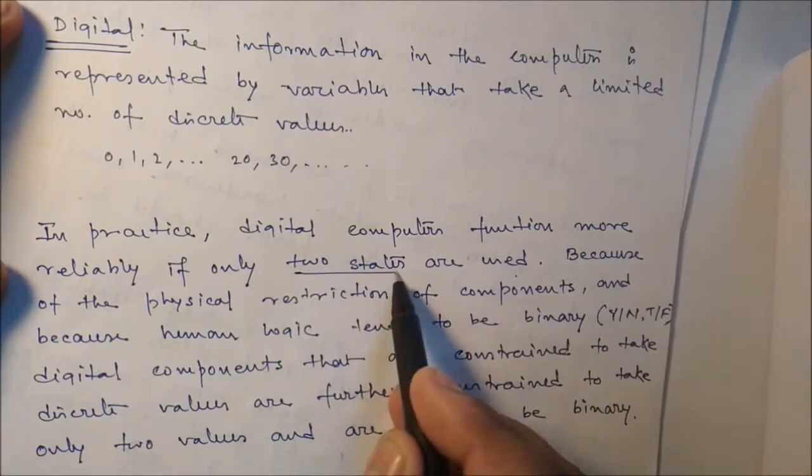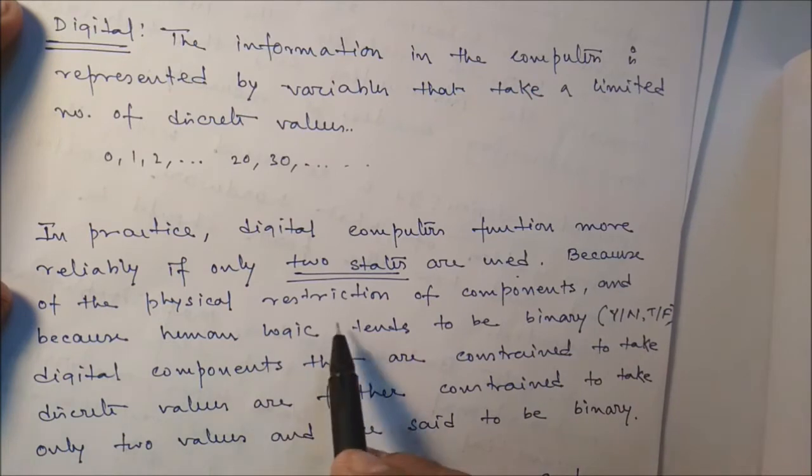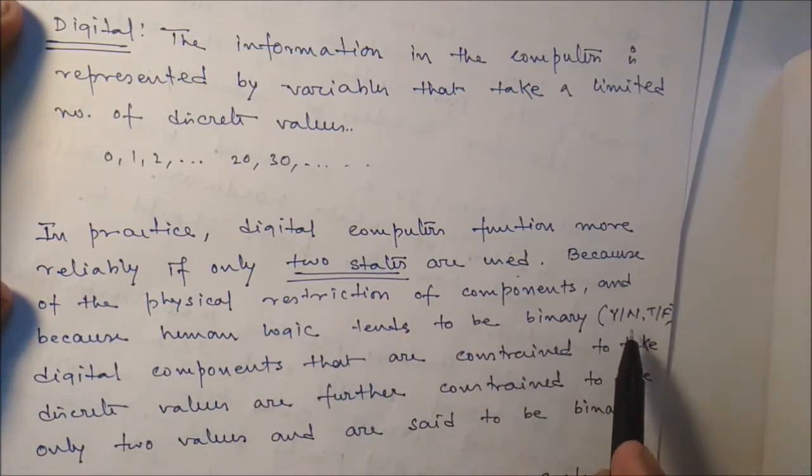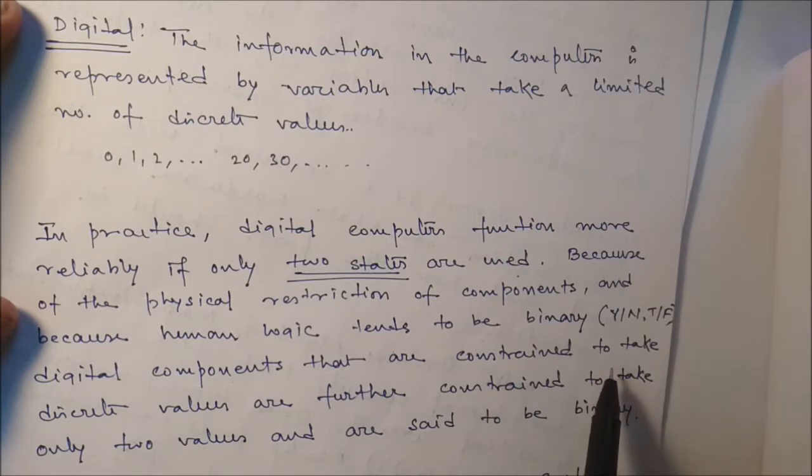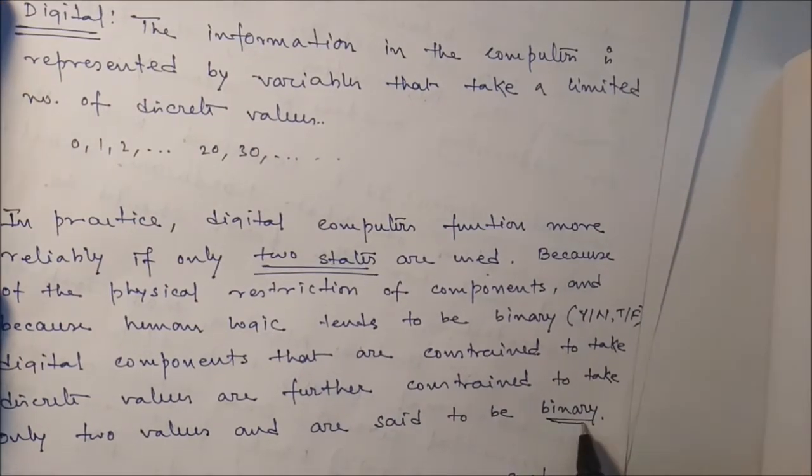Only two states, only binary states, because of the physical restriction of components and because human logic tends to be binary - yes/no, true/false, 0/1. Digital components that are constrained to take discrete values are further constrained to take only two values and are said to be binary. In practical digital computers, computers work only with binary numbers.